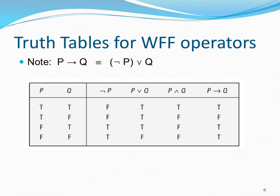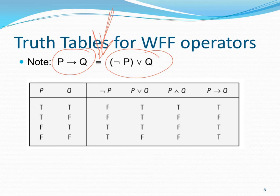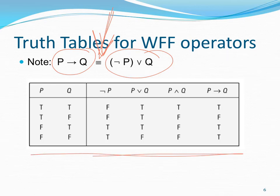Here's a truth table for all the basic woof operators — we went over this the first week of school. P implies Q is equivalent to not P or Q. That triple equals sign means 'is equivalent to.' You should be able to look at this truth table and say, 'yep, I get it.' If you don't, talk to me quickly.